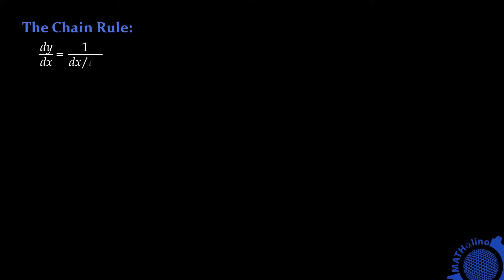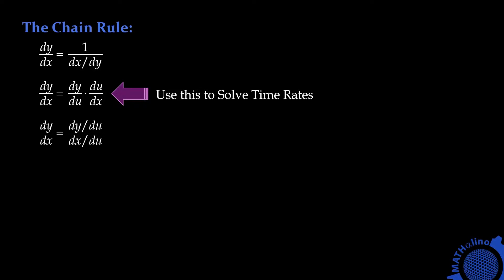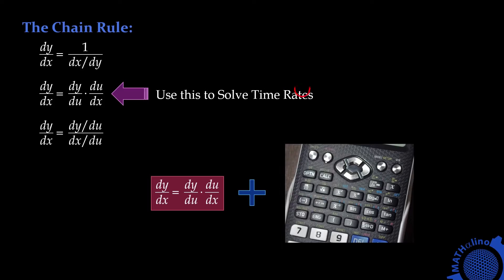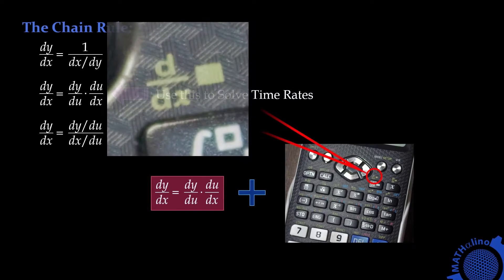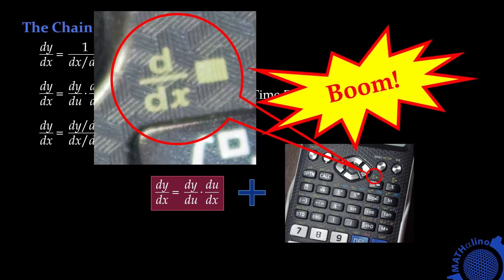There are three basic formulas in chain rule. Number one: dy over dx is equal to 1 over dx over dy. Number two: dy over dx is equal to dy over du times du over dx. And number three is equal to dy over du, all over dx over du. Among the three, the second is the one we are going to use to solve time rates problems. If we pair this formula with our calculator that is capable of solving differentiation, then it's a boom!